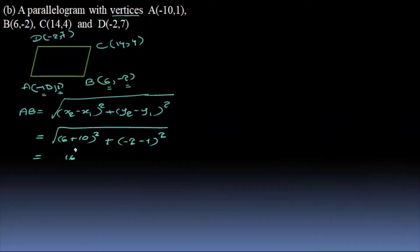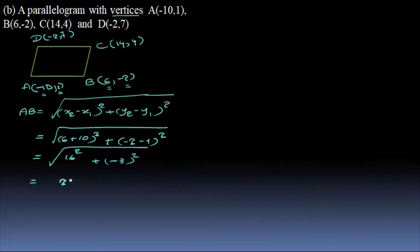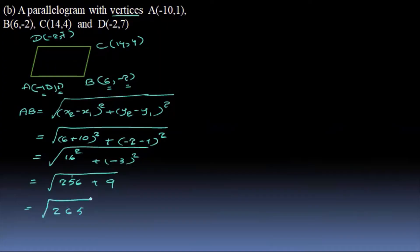16 squared plus minus 2 minus 1: minus 3, the whole square. This gives us a value — a little more. You can do that with a calculator.